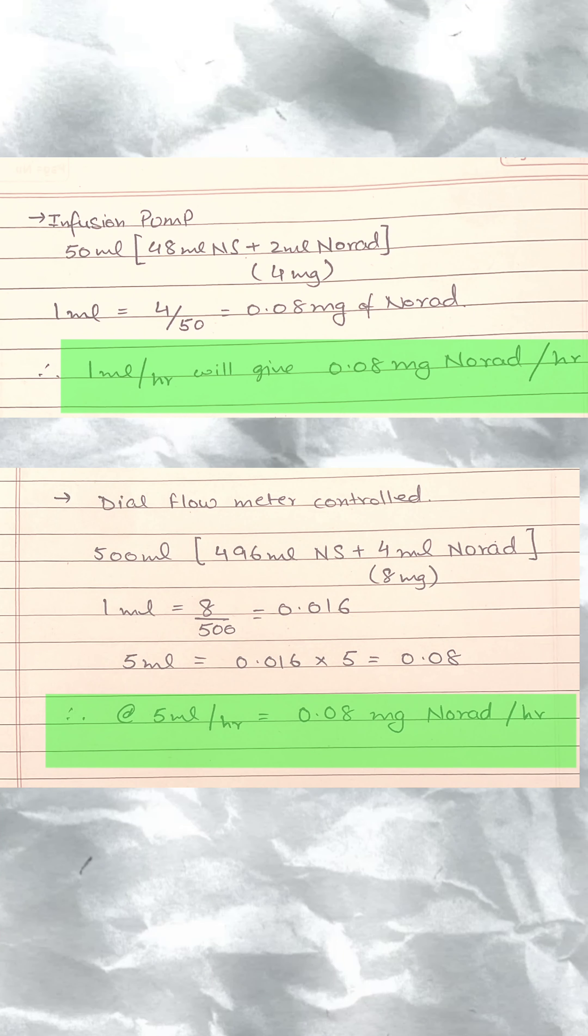Now to control the rate of infusion, you will use a dial flow meter which has a minimum 5 ml per hour speed. If you compare the norad given at 1 ml per hour from an infusion pump, it will be equal to the norad given at 5 ml per hour from a 500 ml NS. That's quite simple and quick.